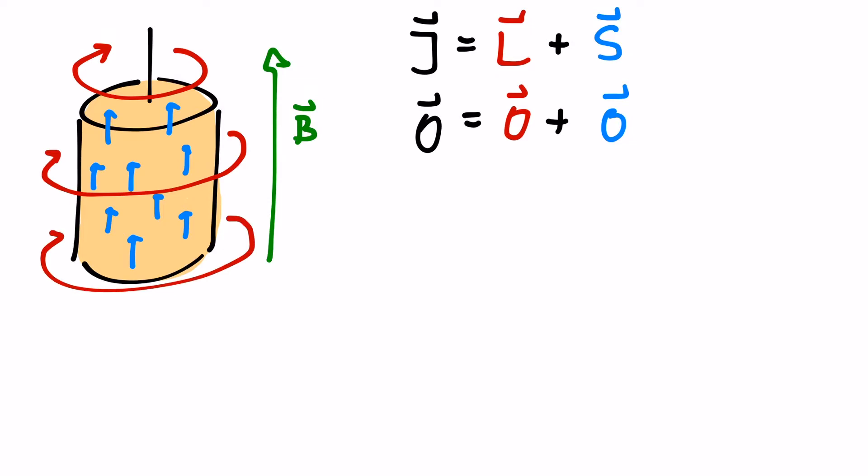How can we explain this? In the beginning, the spins were pointing in random directions, so the total spin was zero. After switching on the magnetic field, the cylinder got magnetized, hence there is now a spin parallel to the magnetic field.